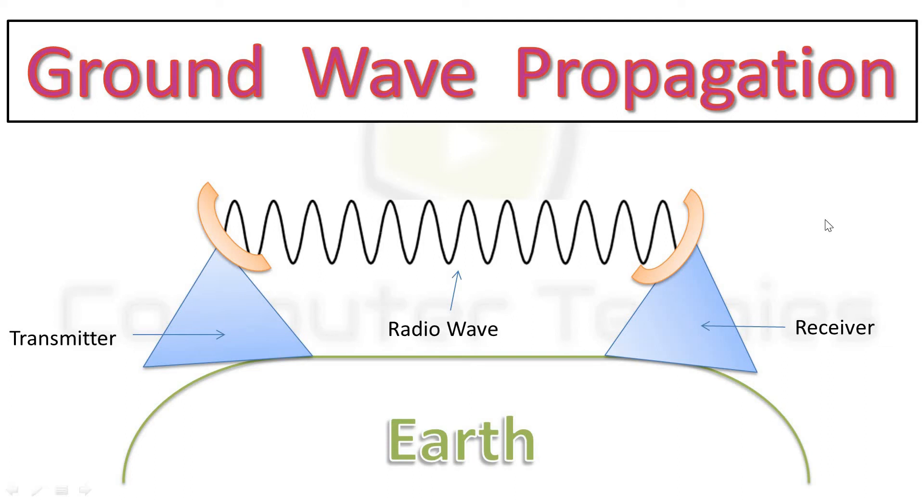In ground wave propagation mechanism, the transmitter and the receiver are the main components. The radio wave propagates near the earth's surface from transmitter to the receiver.